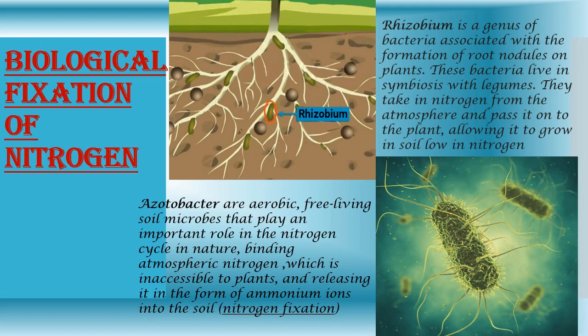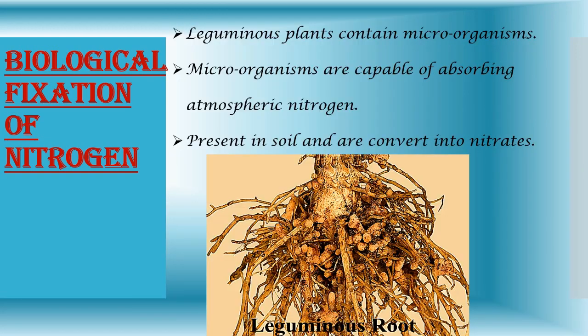Azotobacter are aerobic, free-living soil microbes that play an important role in the nitrogen cycle in nature, binding atmospheric nitrogen — which is inaccessible to plants — and releasing it in the form of ammonium ions into the soil, i.e. nitrogen fixation. Root nodules of leguminous plants contain microorganisms like Rhizobium, which are capable of absorbing atmospheric nitrogen and converting it into nitrate compounds. Microorganisms like Azotobacter, present in soil, are also capable of converting atmospheric nitrogen into nitrates.